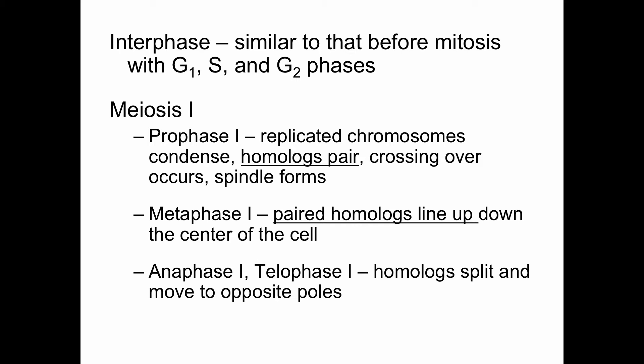So the big difference between prophase one of meiosis one and prophase of mitosis is the pairing of the homologs and the crossing over. That crossing over is significant, and I'll circle back around to that in a little bit.